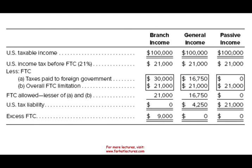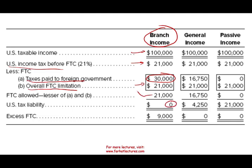This is the branch basket for the Costa Rican operation. The US taxable income is $100,000. If they were in the US, they would pay 21%, which is $21,000. They actually paid the Costa Rican government $30,000. Since they paid $30,000, we can only give them a foreign tax credit of 21% — we won't give a credit for more than what they would have paid in the US. Therefore, the US tax liability is zero because the foreign tax credit eliminates the $21,000. They carry an excess foreign tax credit of $9,000 for future use.